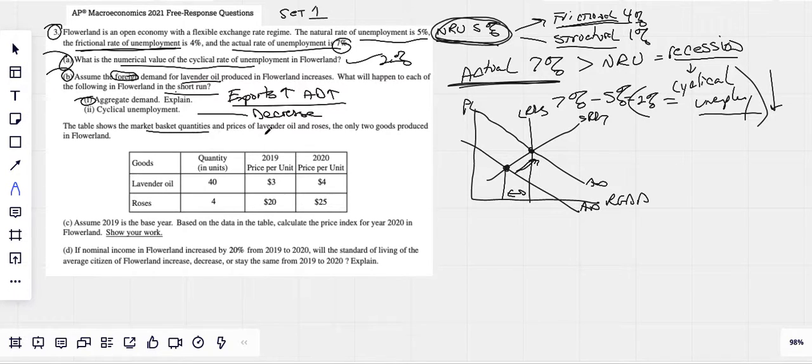All right. Table above. Basket quantities, prices, two goods. This is obviously a GDP CPI question. Assume 2019 is the base year. Based on the data in the table, calculate the price index for 2020. So let's do this in a step-by-step manner here. First of all, this is 2019 quantity and price. We know to find nominal GDP, it's always price times quantity. So nominal GDP for 2019 is 3 times 40 for 120, and 4 times 20 is 80. So it looks like nominal GDP is 200 for 2019.